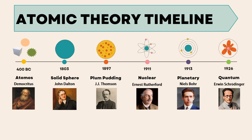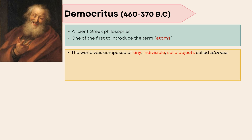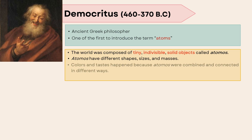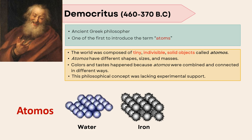Let's begin with the atomos by Democritus. Democritus was an ancient Greek philosopher who was one of the first to introduce the term atoms. He proposed that the world was composed of tiny, indivisible solid objects called atomos. Atomos have different shapes, sizes, and masses. He thought the colors and taste happened because atomos were combined and connected in different ways. This philosophical concept was lacking experimental support.